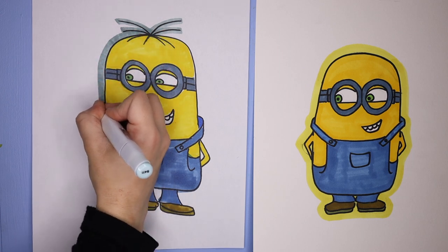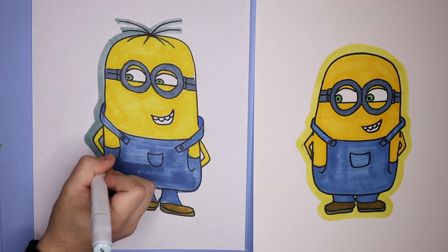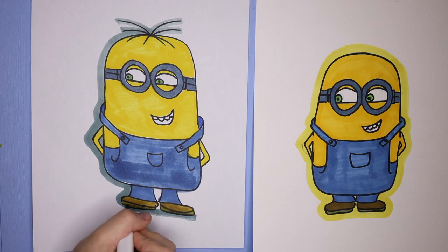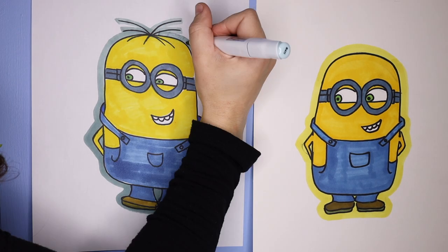And then I went ahead and took this kind of light gray color and outlined the minion. I just really like doing this. You don't have to do this if you don't want to. You can create a whole environment. You can make a second minion, whatever you would like.